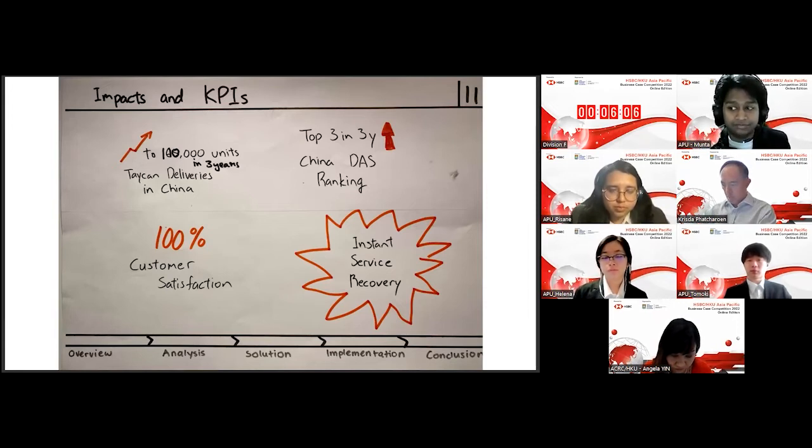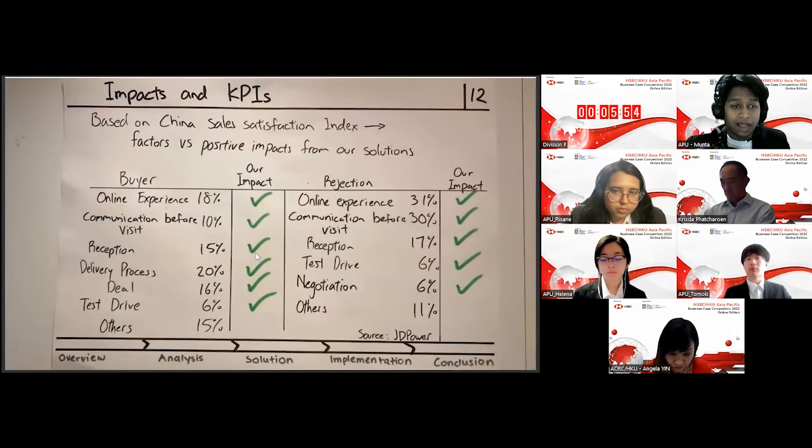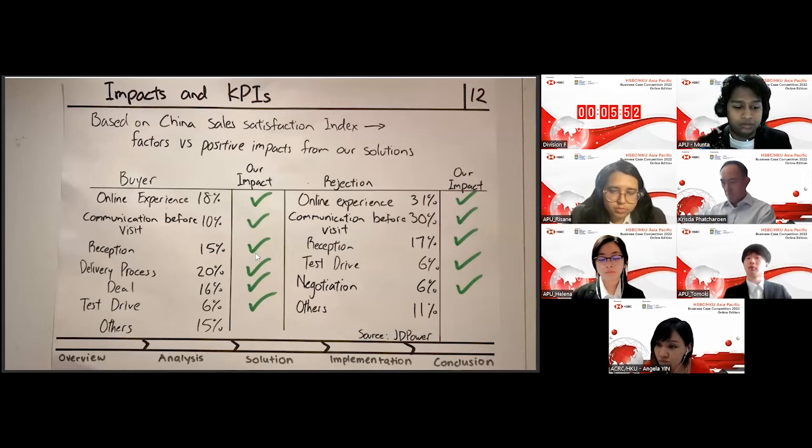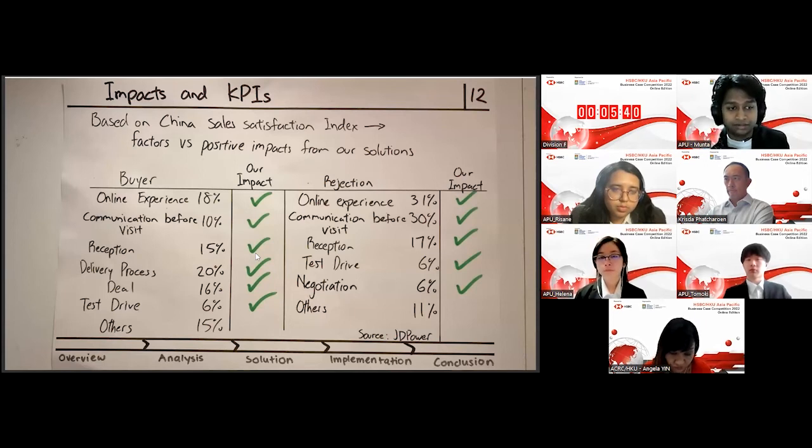And currently, we've seen that we have a number of service failures. And so we want to initiate instant service recovery. So how better can we know that our solutions are having an impact? Well, if we take a look at the China's Automobile Sales Satisfaction Index provided by JD Powers, then buyers generally tend to factor online experience, delivery process, and deal with the sales representative as the most important factor in their purchase.